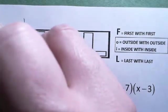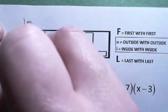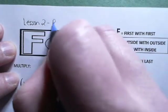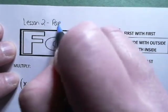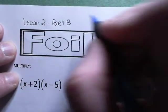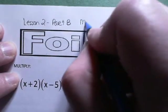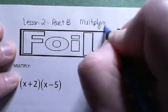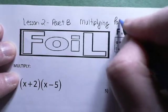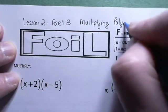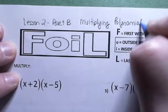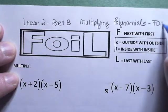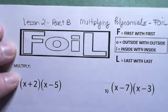Hello. This is going to be lesson two, part B. And it's going to be multiplying polynomials, but something called FOIL. It's a special method that we use.